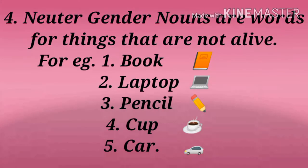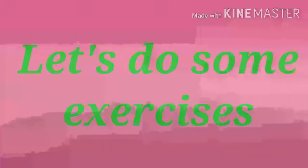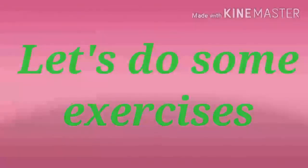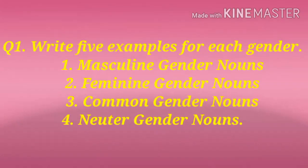Now let's do some exercises in your notebook. Write five examples for each gender — but write your own examples, do not copy from the ones given in the video. Write five for masculine, five for feminine, five for common, and five for neuter gender nouns. This is your gender part. Thank you, goodbye.